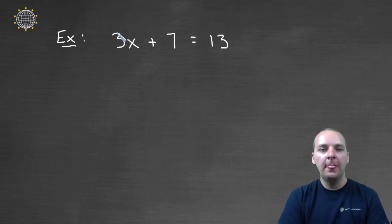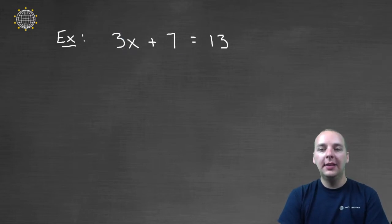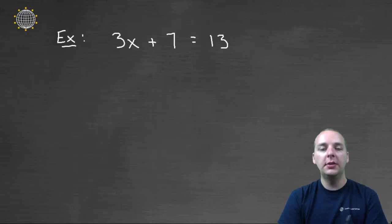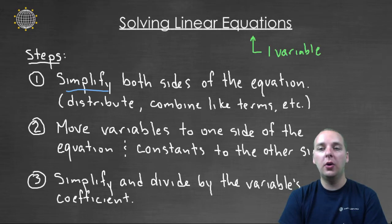So here's our first example, 3x + 7 = 13. This example, like a lot of your examples, won't have a step one, because step one says simplify both sides. Well, in this equation, both sides are already simplified. 3x + 7 can't be simplified, and 13 can't be simplified. So if there's nothing to simplify, you are allowed to just skip step one and go right to step two.